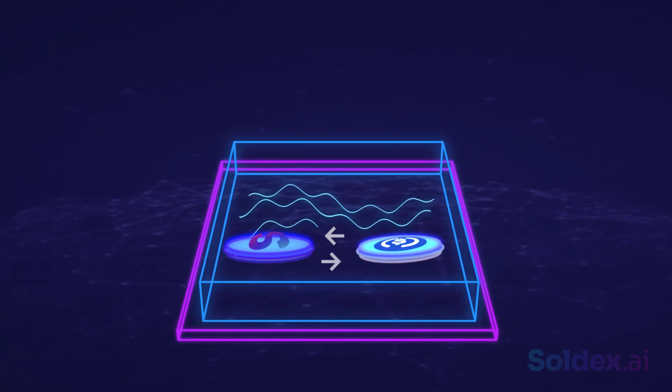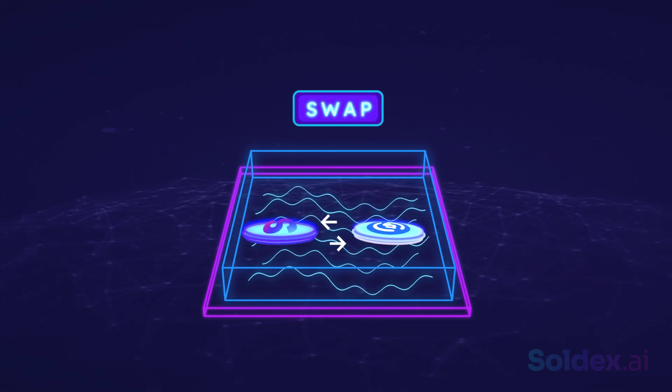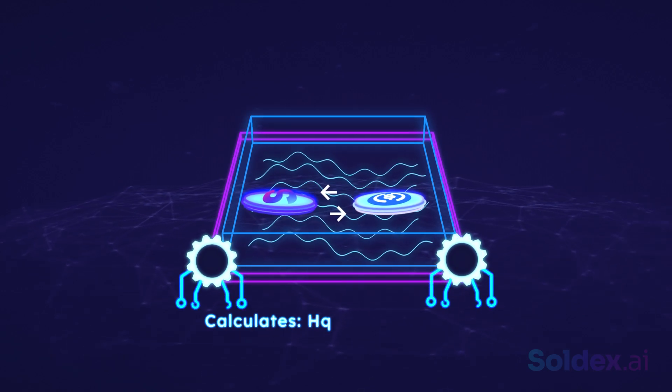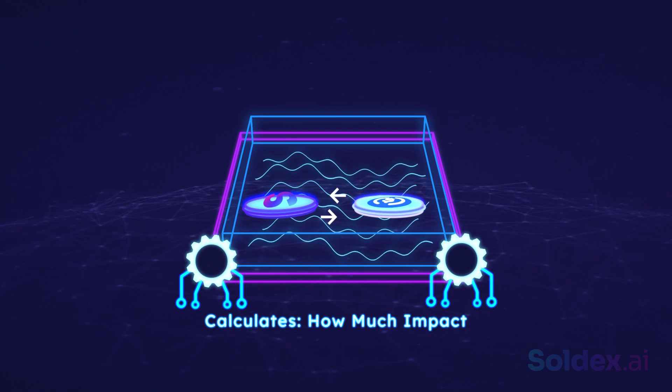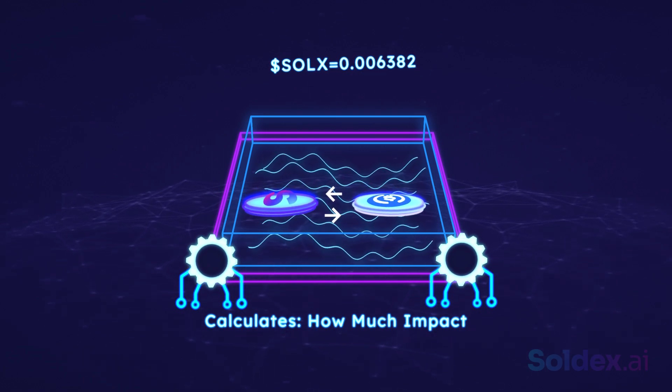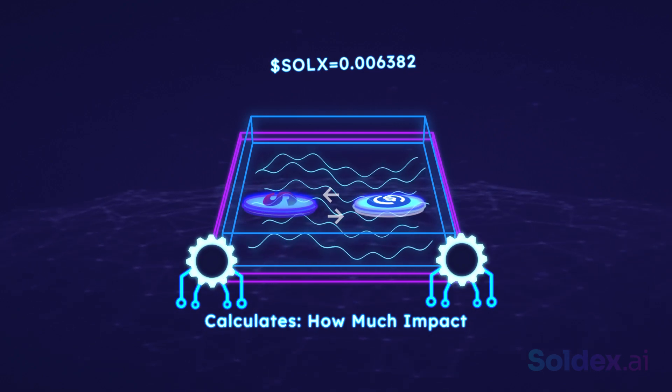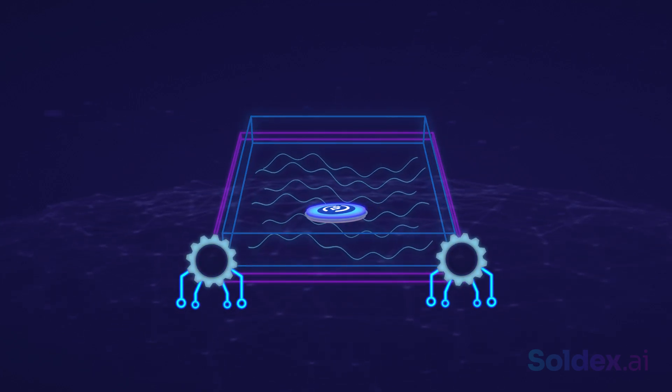For instance, imagine you want to trade Solex in a Solex USDC liquidity pool. After clicking the swap button, the pool's algorithm calculates how much impact the trade will have on the liquidity pool's reserves. After this calculation, a price quote for Solex is given. Immediately after approving your transaction, the AMM deposits the USDC into the pool and sends Solex from the pool to your wallet.